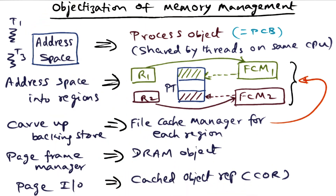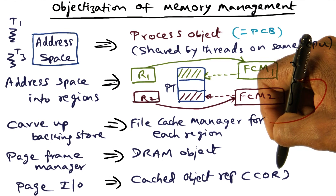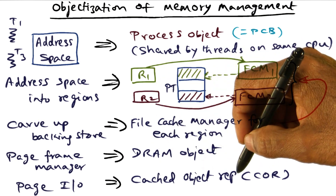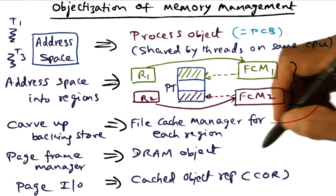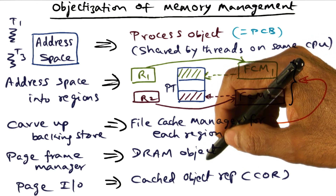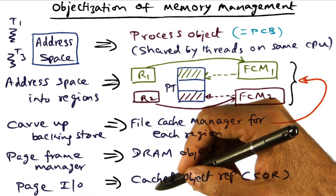You have to do the input/output in order to move the page from the backing store into DRAM. So we're going to declare that there will be another object, which we'll call the cached object representation, or COR. This is the one that is going to be responsible for knowing the location of the object you're looking for on the backing store, and doing the actual page I/O.